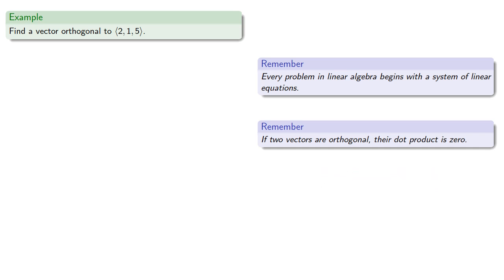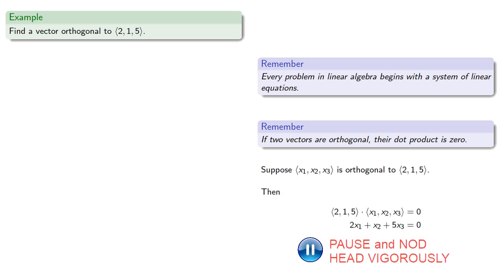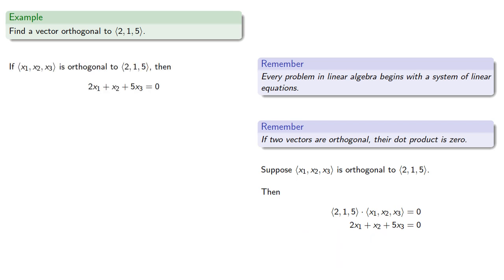So suppose this vector is orthogonal to (2, 1, 5). Then we know the dot product is 0, and that gives us a linear equation. So our system—nothing says a system has to have more than one equation—is,